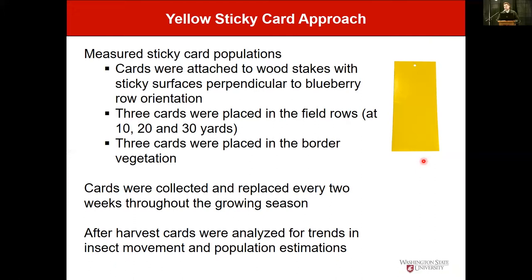In addition to production attributes and pollination, we looked at yellow sticky cards placed in the field. The sticky cards were clipped to wood posts — three placed in the border vegetation with sticky sides facing away from and toward the field, and three placed in the rows at 10, 20, and 30 meters into the field. Cards were placed at the beginning of the season and switched out every two weeks, allowing us to evaluate insect populations at different points in the season and compare field versus border vegetation.